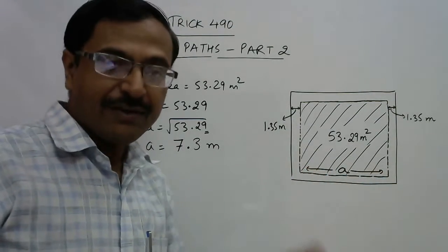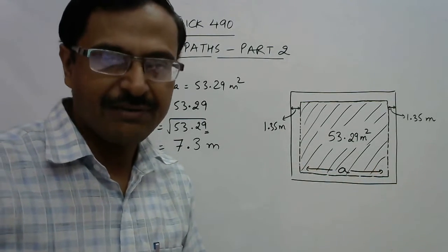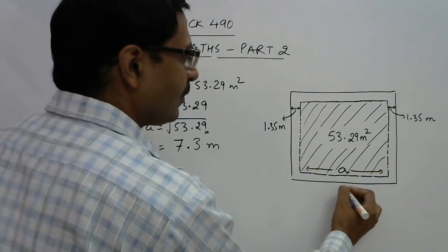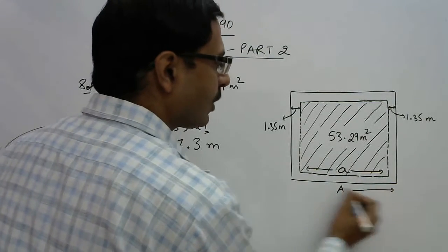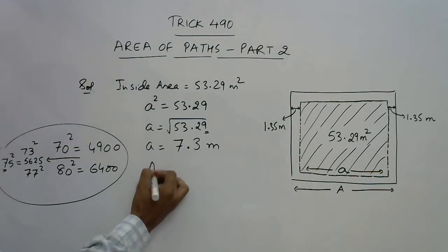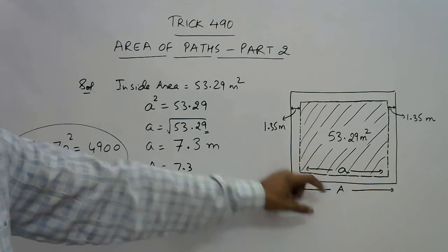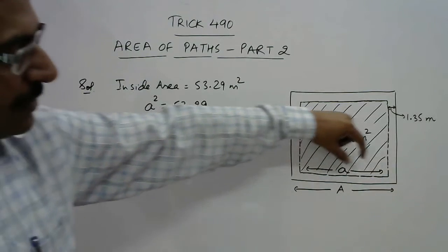7.3 meters is the length of the inside boundary. Once we have found out the inside boundary length, things are very very easy. For finding capital A, the outer boundary, this 7.3 will obviously be there and on both sides this width will be added.